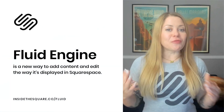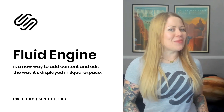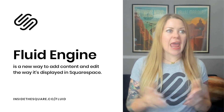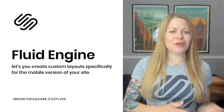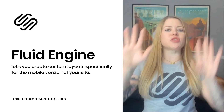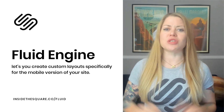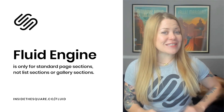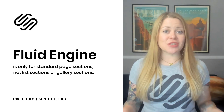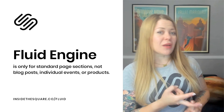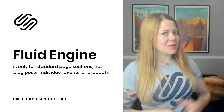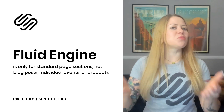Let's recap: Fluid Engine is the brand new editing experience now available in Squarespace. It lets you take blocks of content and arrange them inside a row and column grid in any way that you want. You can resize these blocks, have them layered, and make the mobile version of your website a completely different layout than the desktop version — no extra code required. List sections and gallery sections still work the same way. If you're working on a blog post, an individual event, or additional product details, those use the classic editor, exactly the same as before. But brand new page sections will be using Fluid Engine.